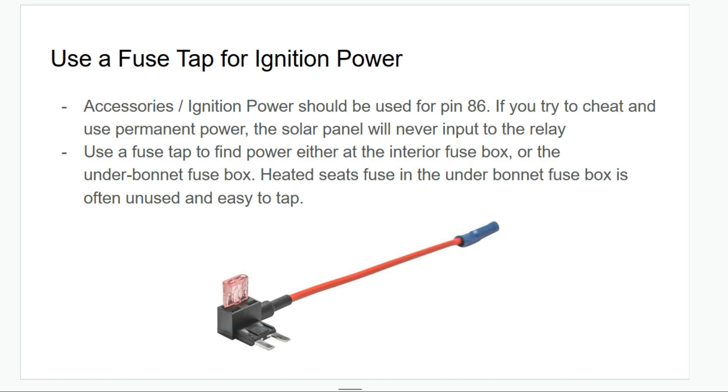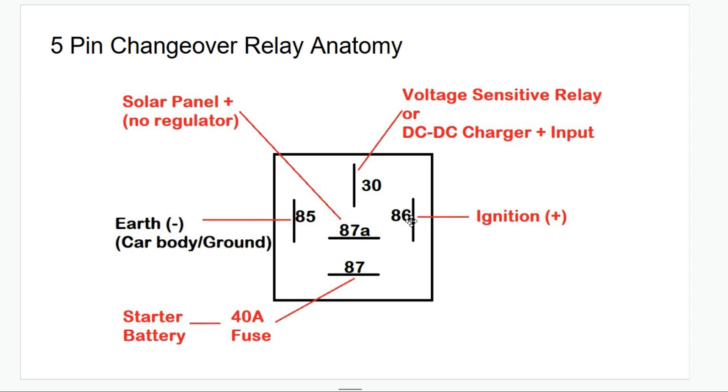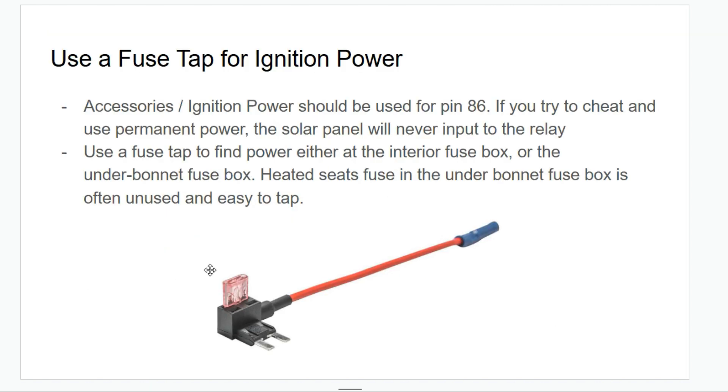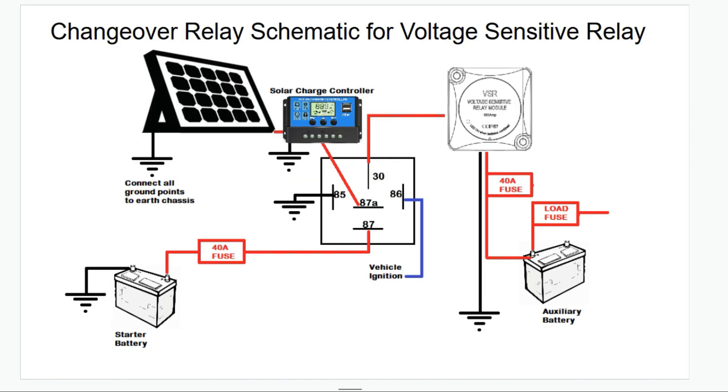The accessories ignition power should be plumbed into pin 86. If you try and cheat and use permanent power, the solar panel will never input to the relay. Use a fuse tap to find power either at the interior fuse box or the under bonnet fuse box. The heated seats fuse in the under bonnet fuse box is often unused and it's quite a good one to tap to get that power to pin 86.